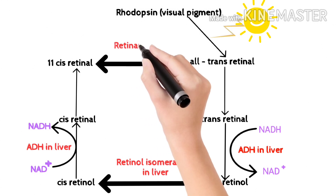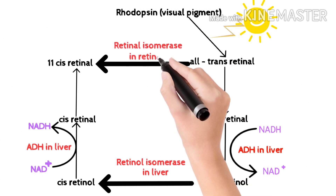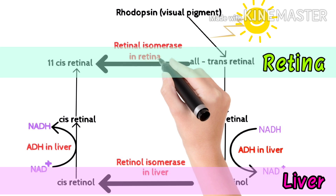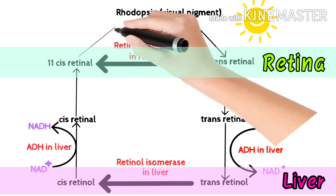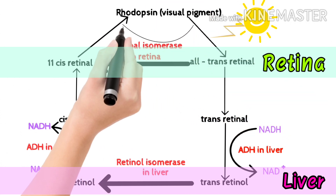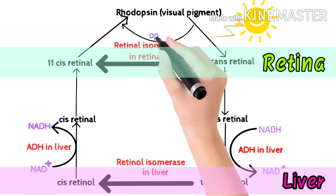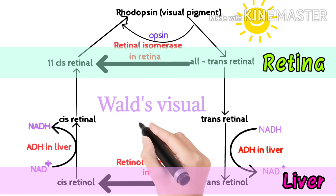Isomerization of trans to cis occurs both in the liver and retina. The difference to observe is that the retina contains retinal isomerase acting on retinal, while the liver contains retinal isomerase acting on retinol. The 11-cis-retinal combines with opsin to form rhodopsin once again. This is all about Wald's visual cycle.